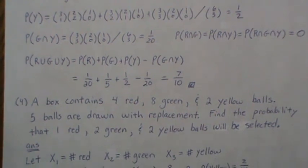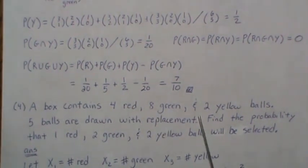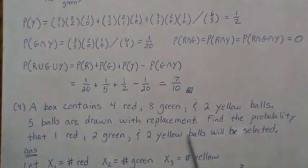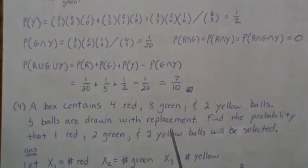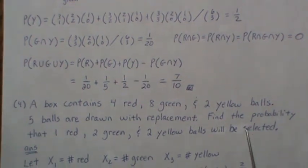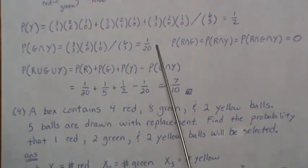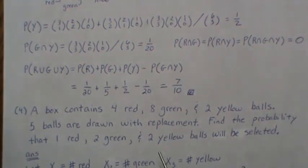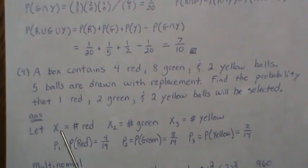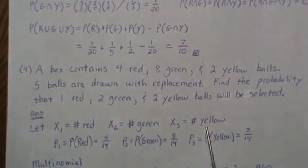Problem four: a box contains four red, eight green, and two yellow balls. Five balls are drawn with replacement. Find the probability that one red, two green, and two yellow balls will be selected. This is the classic multinomial setting — or you could think of it as a multi-hypergeometric.